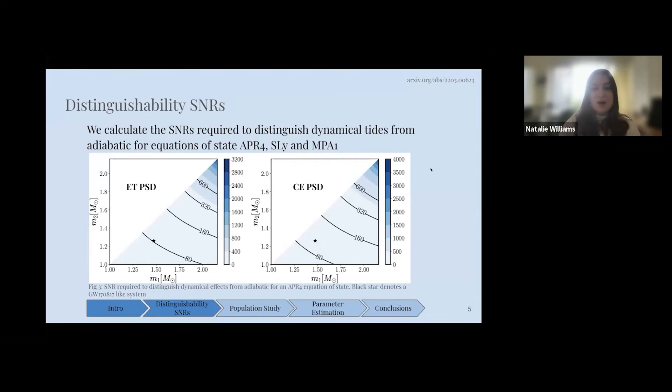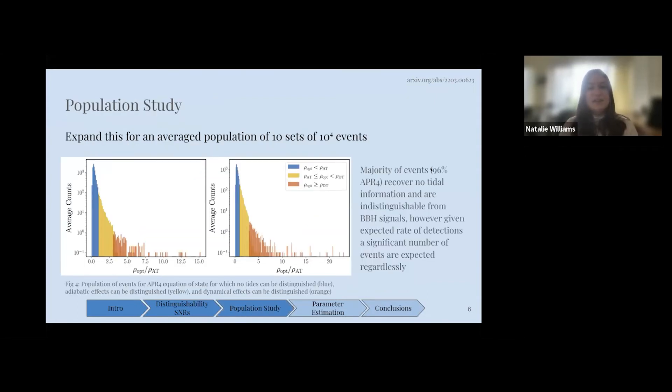We then apply this to a population of 10 sets of 10^4 events. We draw our masses from a double peak Gaussian mass distribution, and we do an SNR cut of 8 and a distance cut of 0.5 in redshift because we require these really high SNRs to be able to distinguish these effects. This is particularly for an equation of state called APR4, which is quite a soft equation of state. It's worth keeping in mind that all of these measurements are kind of a worst case scenario, because stiffer equations of state maximize the effects more.